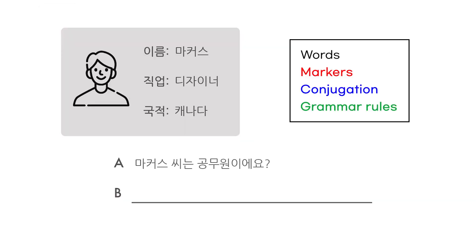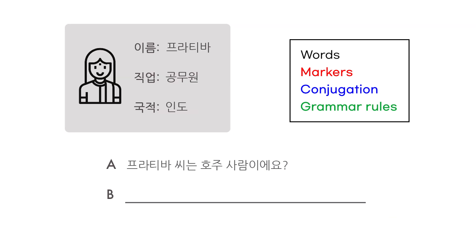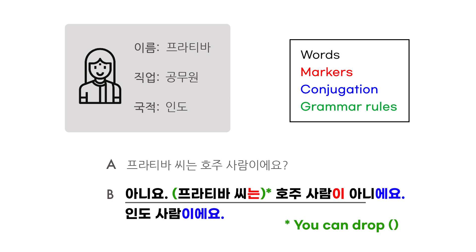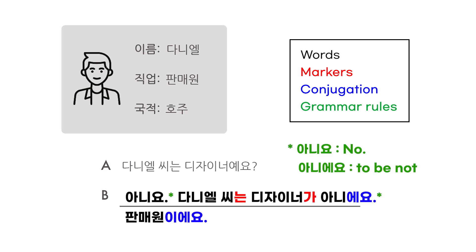마커스 씨는 공무원이에요? 아니요, 마커스 씨는 공무원이 아니에요. 디자이너예요. 프라티바 씨는 호주 사람이에요? 아니요, 프라티바 씨는 호주 사람이 아니에요. 인도 사람이에요. 다니엘 씨는 디자이너예요? 아니요, 다니엘 씨는 디자이너가 아니에요. 판매원이에요.